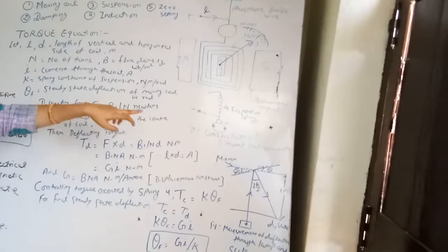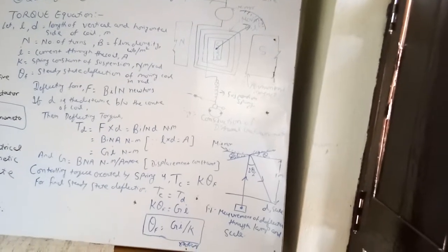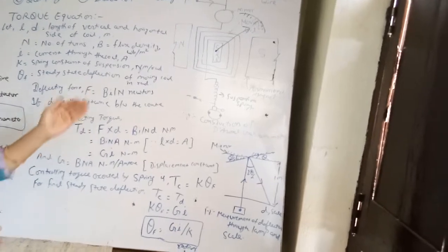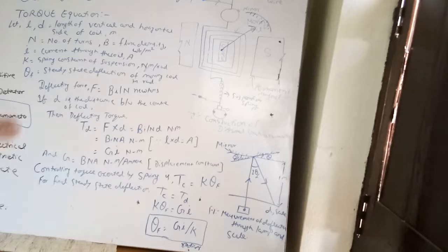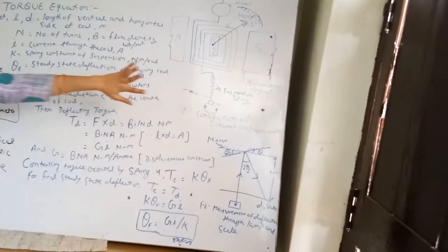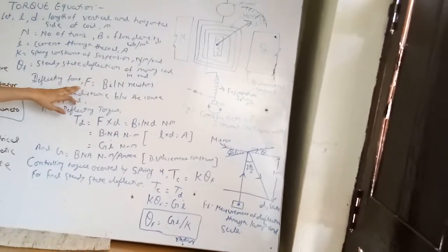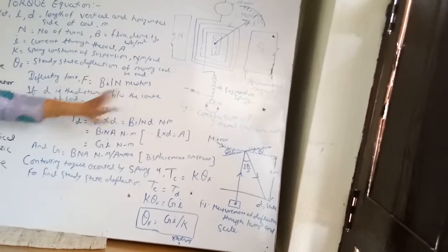K is the spring constant of the suspension, whose unit is newton meter per radian, and theta_F is the steady state deflection of the moving coil — that is, how much angle is deflected by the needle. If B is the flux density, I is the current, N is the number of turns, and L is the length of the coil, then the force produced is given by B·I·L·N Newtons.